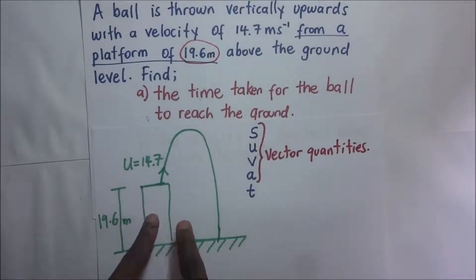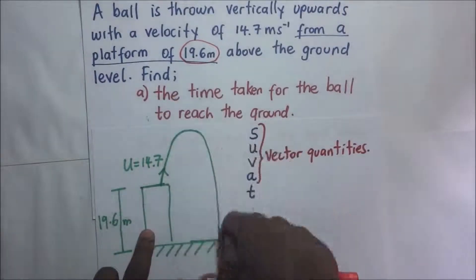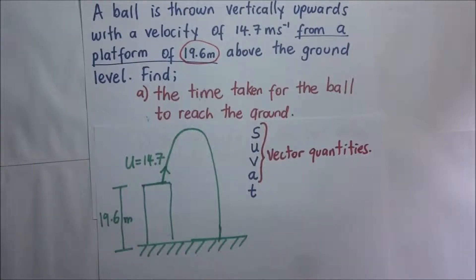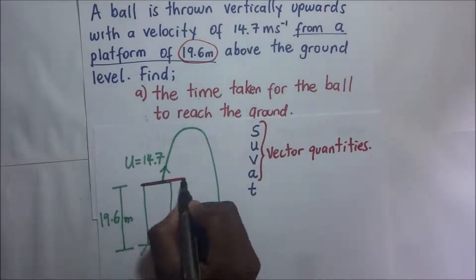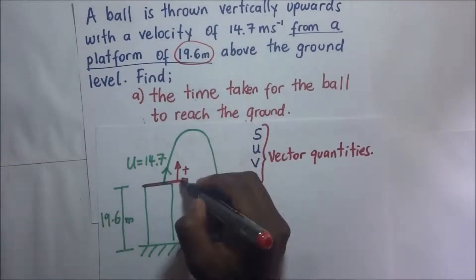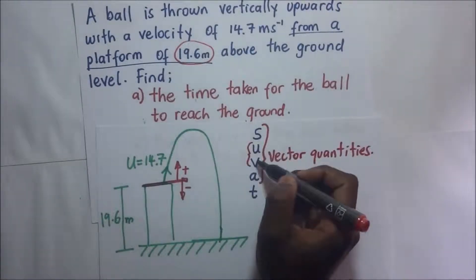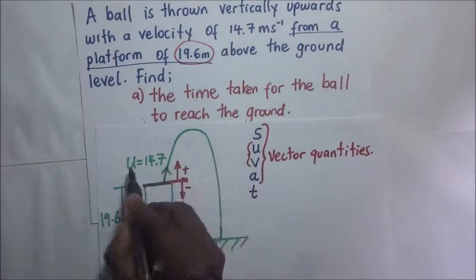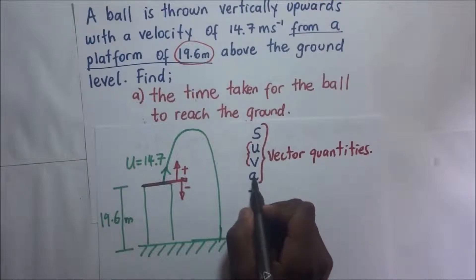This motion is first moving upwards, then when it reaches maximum height it changes direction and moves downwards. That is going to affect the signs of these quantities. Displacement is distance in a specified direction. Moving upwards, displacement will be positive; moving downwards, it will be negative. Similarly, if you are moving upwards, velocity will be positive; if downwards, it will be negative.